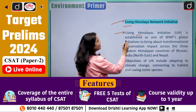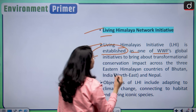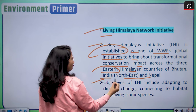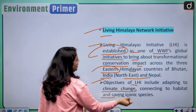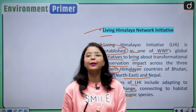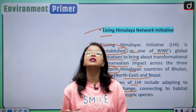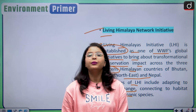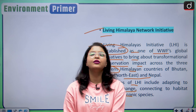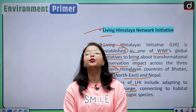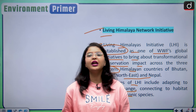The Living Himalaya Network Initiative (LHI) is established as one of WWF's global initiatives to bring about transformational conservation impact across the three Eastern Himalayan countries of Bhutan, India, and Nepal. Objectives of the LHI include adapting to climate change, connecting habitat, and saving iconic species, because they face habitat degradation due to deforestation, human involvement, and climate change. We are taking various conservation steps in India as well as globally for the protection and conservation of this iconic species, before we lose them forever, as various species might face the same fate as the dinosaurs.